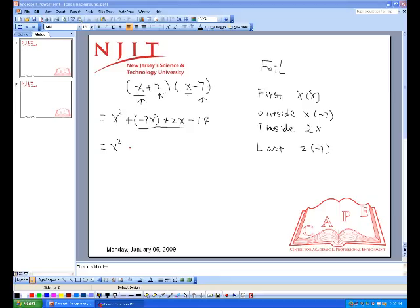The final answer is x squared minus, because negative 7 plus 2 is negative 5, so it's negative 5x minus 14. That will be the answer you got using FOIL method.